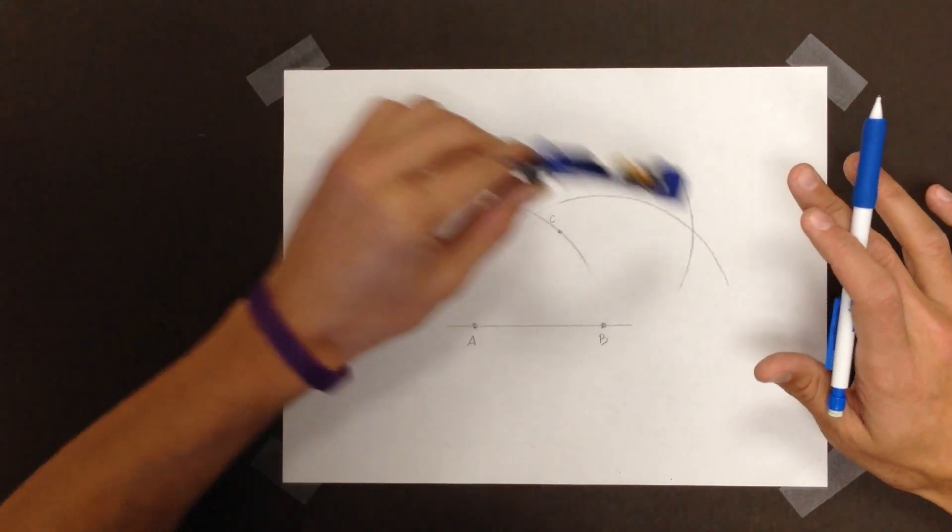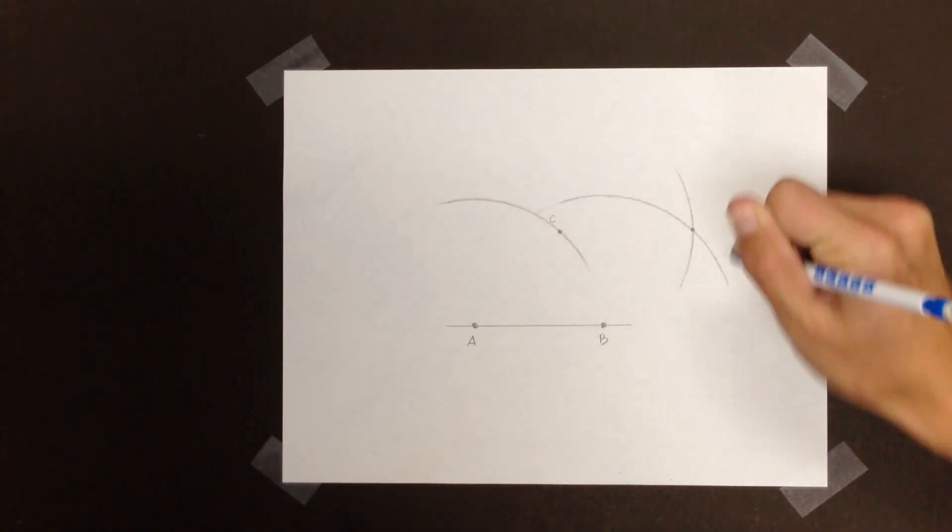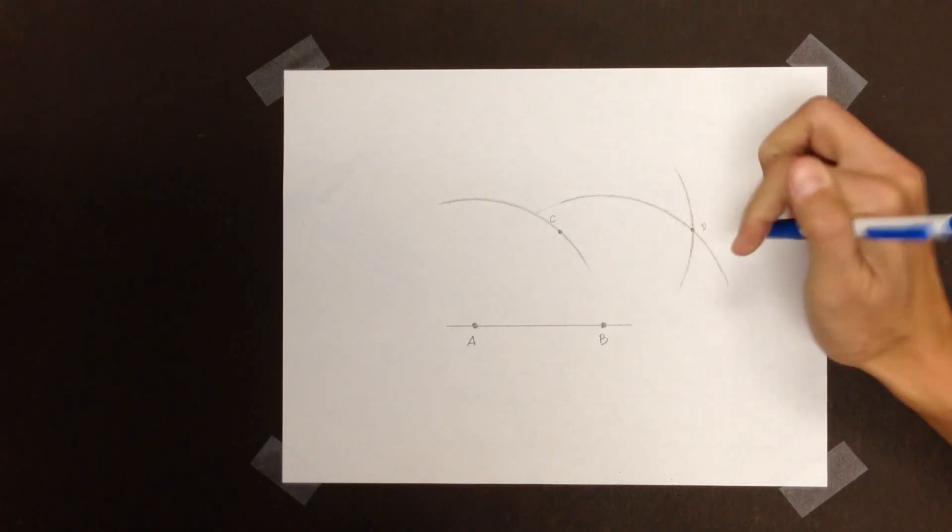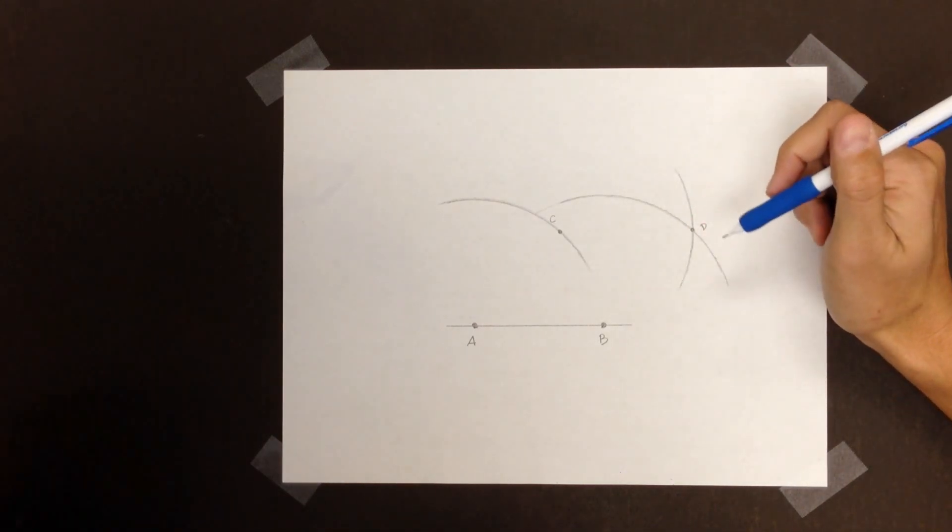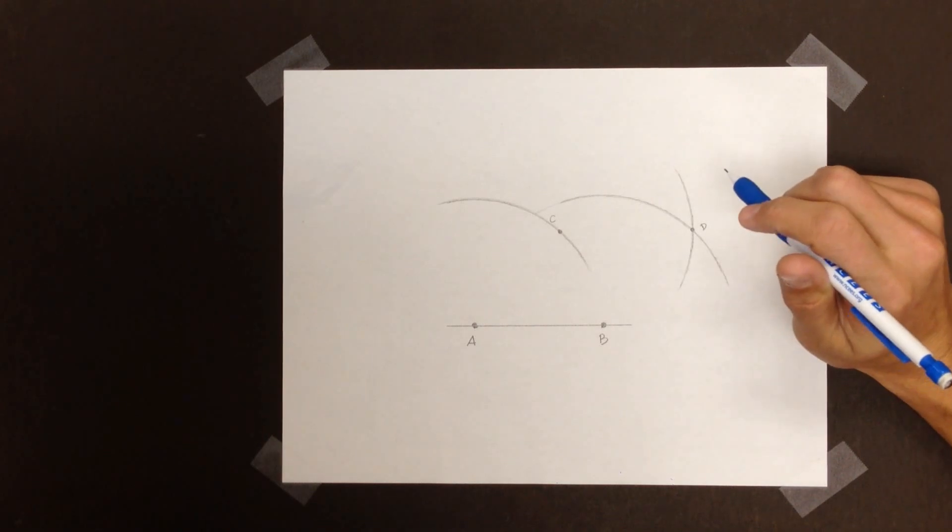Here we go. I'll call that intersection point D. And it looks like I've got some dots to connect.